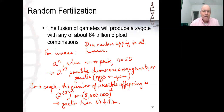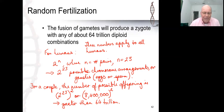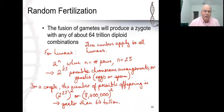You represent one of the 64 trillion predictable possibilities your parents could have produced. Your brothers and sisters represent some of the other possibilities. But remember, it's not just this that causes genetic variation — we also have to factor in the unpredictability of crossing over: where it occurs, when it occurs, if it occurs, and how frequently. That just scrambles things even further. The 64 trillion is very predictable — just simple statistics. But when we factor in crossing over, it becomes totally unpredictable.